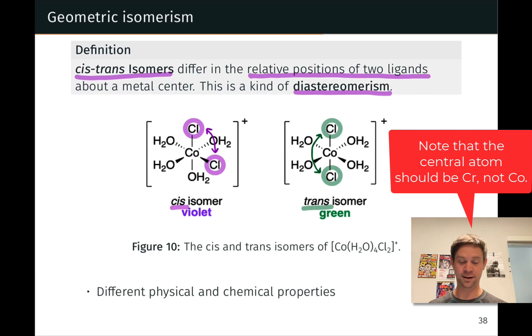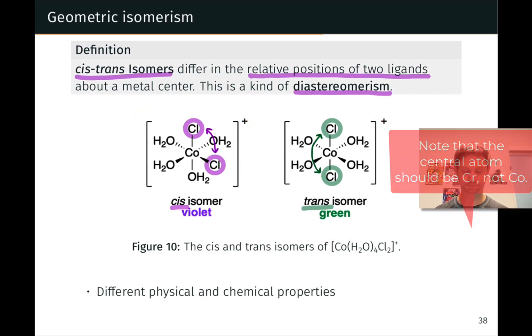but the trans isomer is more stable than the cis isomer due to the larger distance between the chloride ligands. And so there is an inner conversion of the cis to the trans spontaneously over time, indicating that they have different stabilities, different physical properties and vastly different colors. The cis isomer is a beautiful violet color. The trans isomer, a green color.